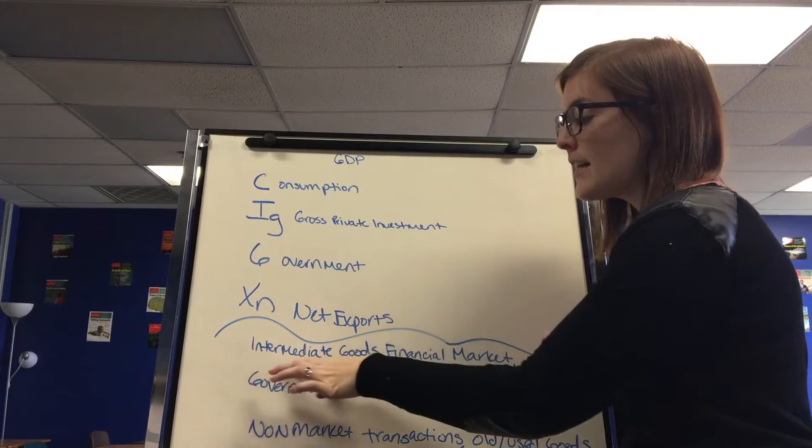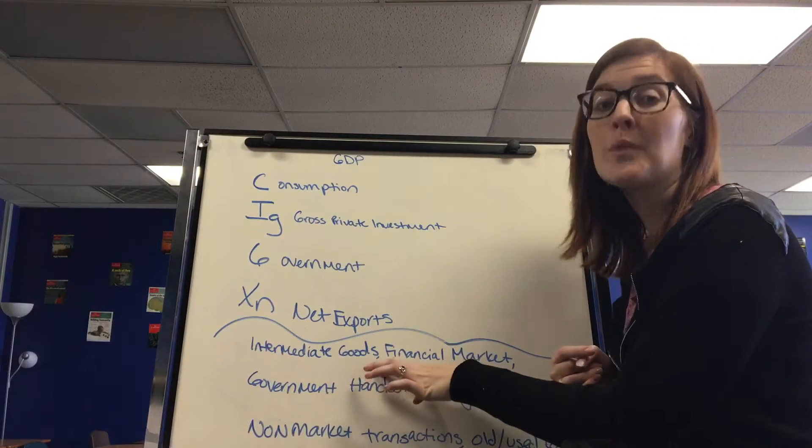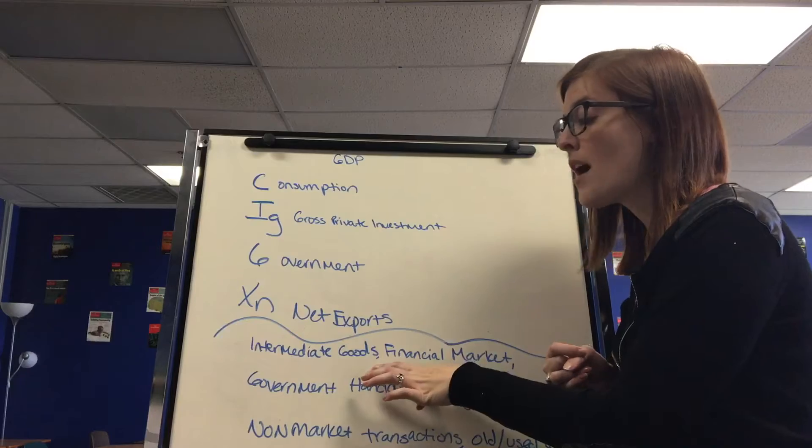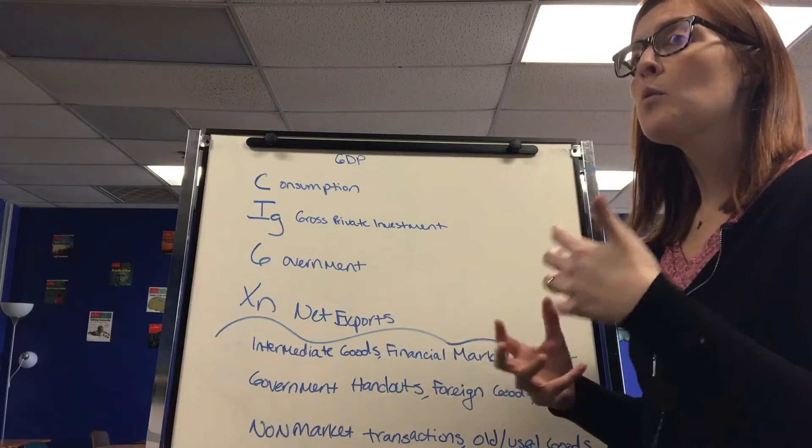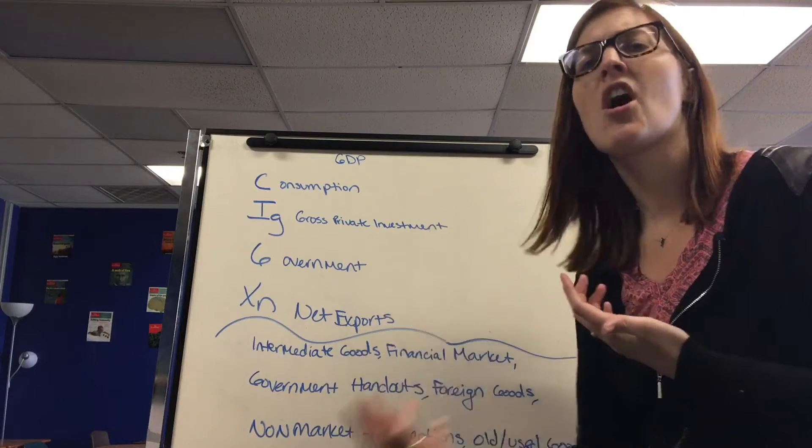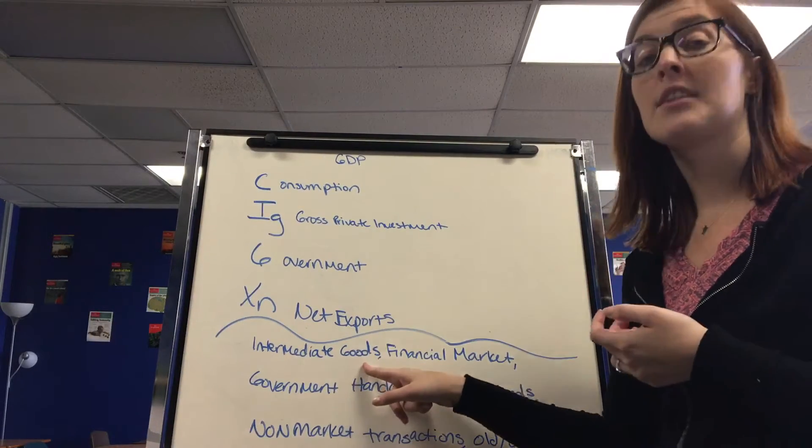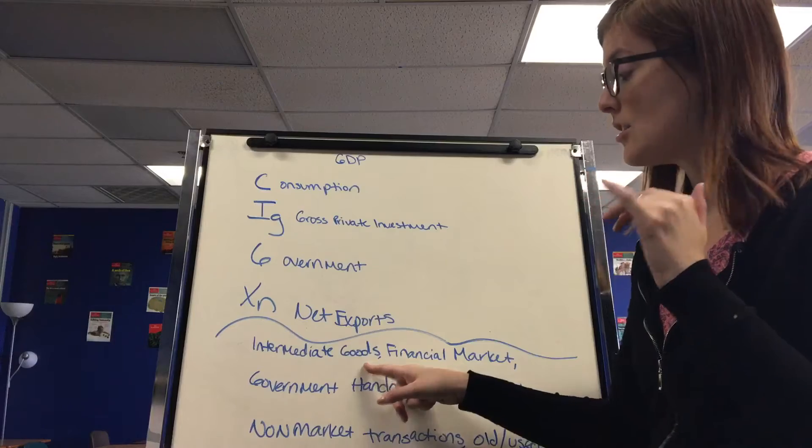What's excluded from GDP are intermediate goods. These are resources used to make the finished product. It's assumed that when you think of steel in a car, the steel will be included in the price of the car that is sold. So resources, also known as intermediate goods, do not count in GDP.